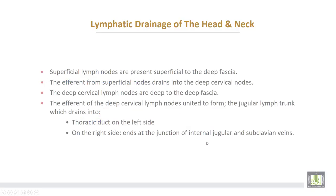The superficial lymph nodes are present superficial to the deep fascia. Afferents from superficial nodes drain into the deep cervical lymph nodes. The deep cervical nodes are deep to the deep fascia, and the afferents of the deep cervical nodes unite to form the jugular lymph trunk, which drains into the thoracic duct on the left side, but on the right side ends at the junction between the internal jugular and subclavian veins.